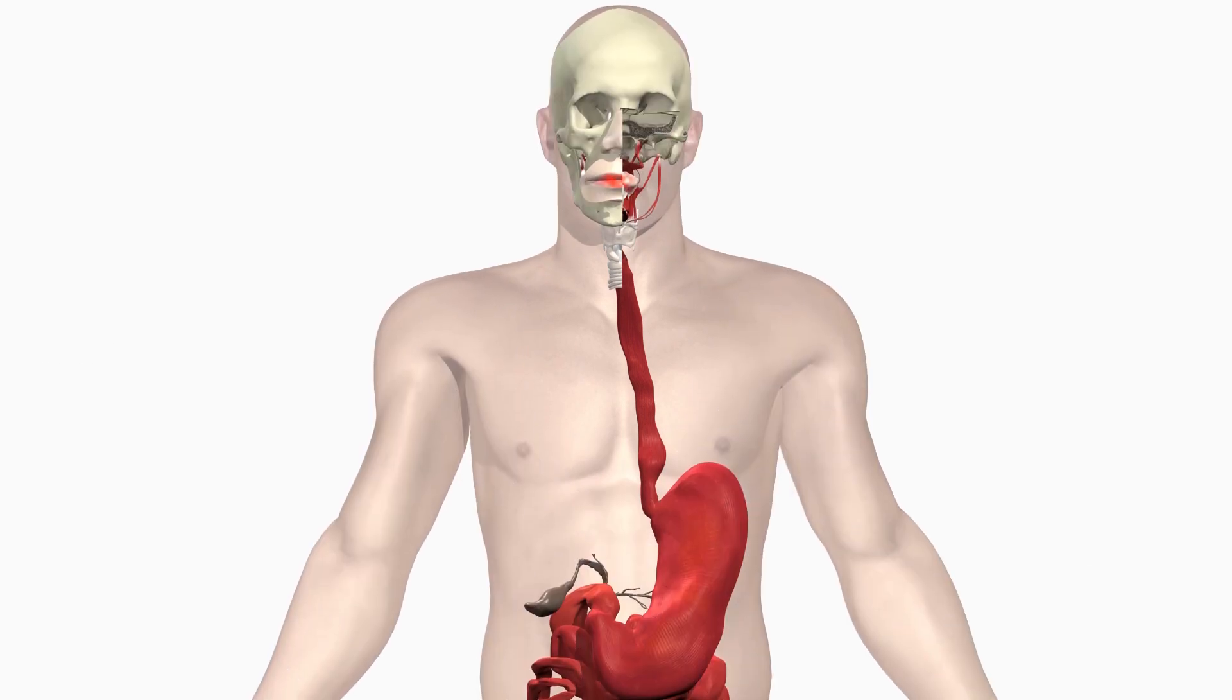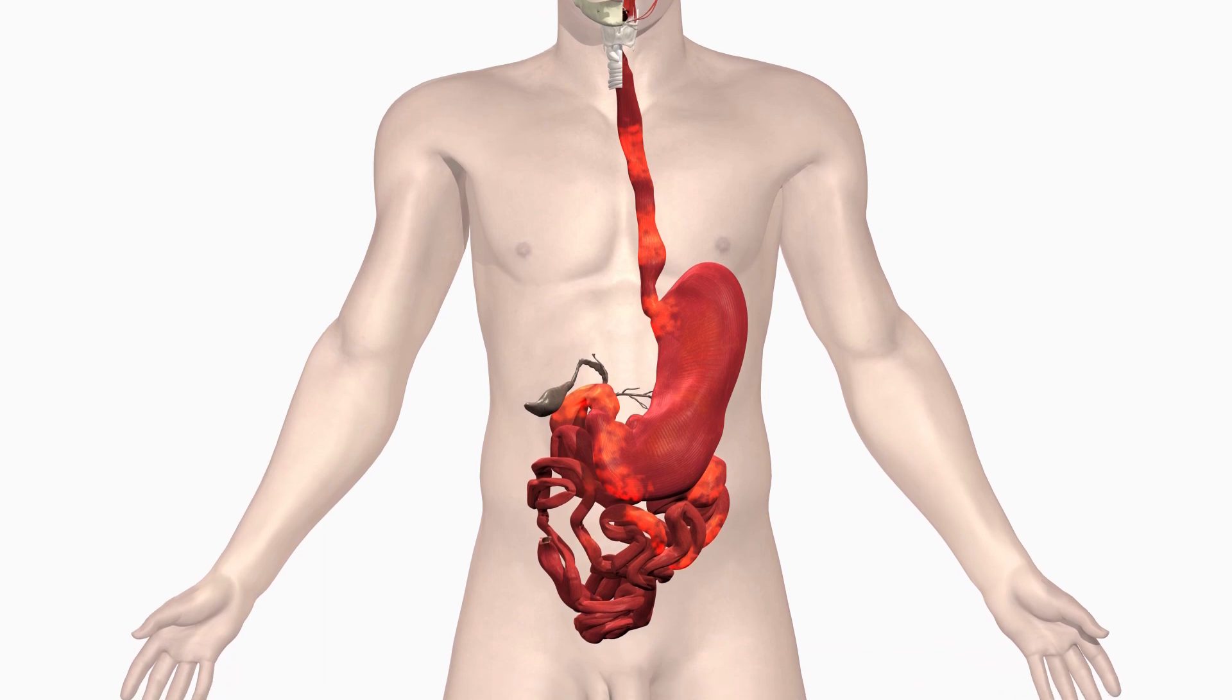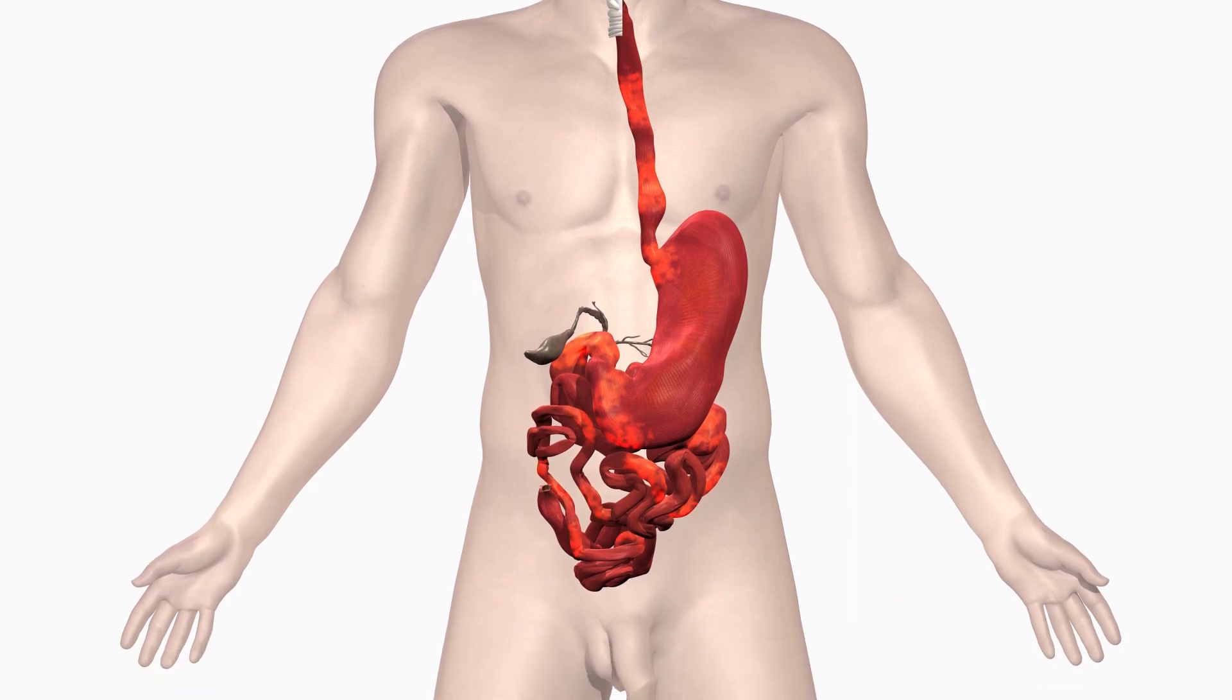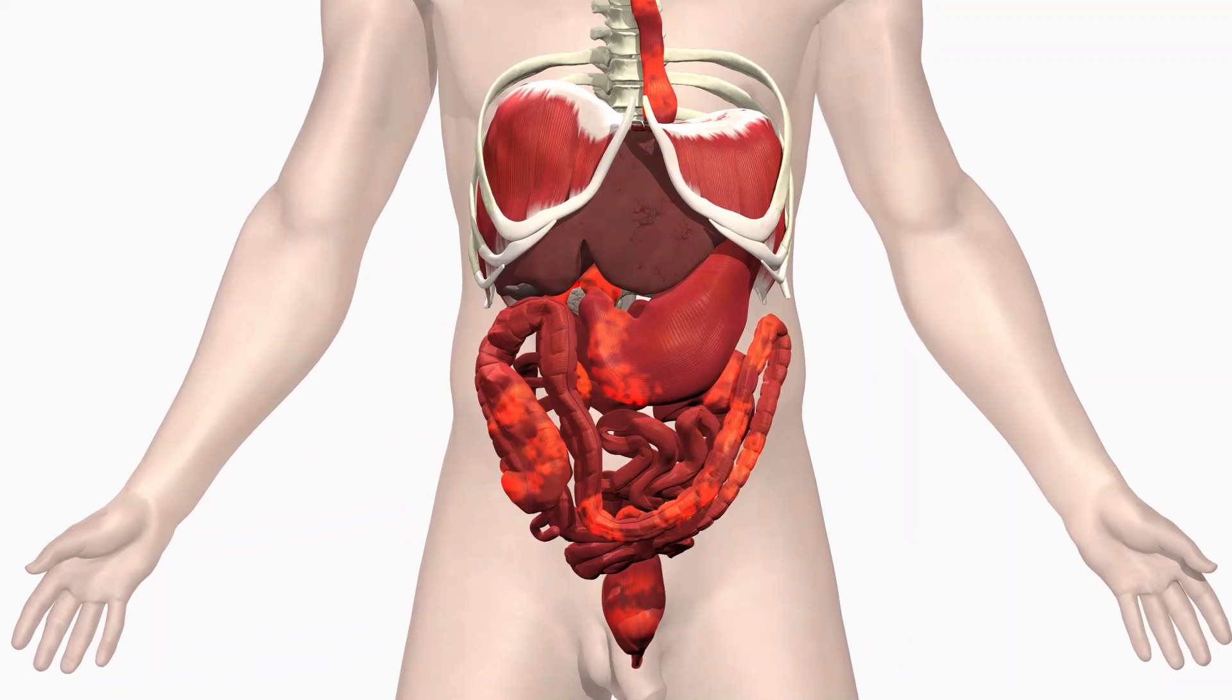Crohn's disease is diagnosed when one or more patches of inflammation occur in between normal areas of intestine. It is categorized according to the part of the digestive system affected.